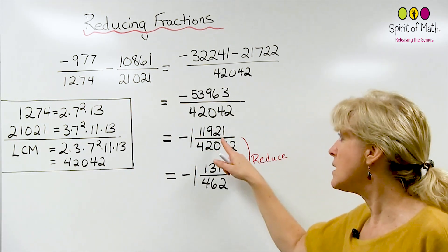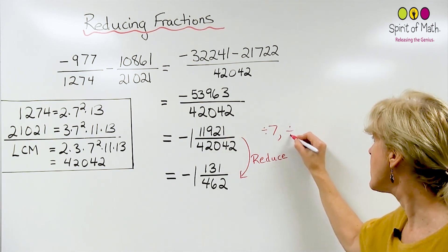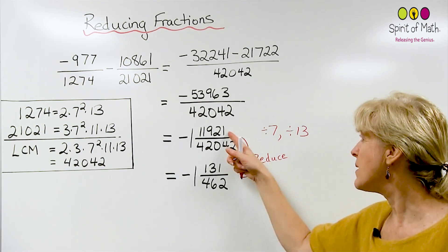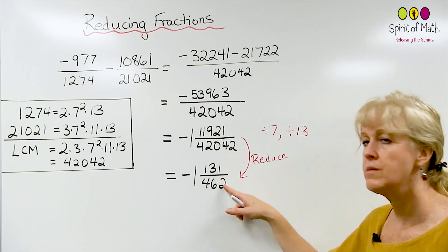So in this case, you can actually divide by 7 and you can divide by 13. Only one 7, only one 13. You divide by 7 and divide by 13. For the numerator, you get that. For the denominator, you get that.